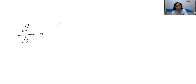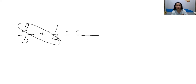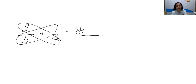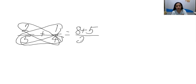Example is 2 fifths plus 1 fourth. So, it is dissimilar because the denominators are different. That is equal to — let's put the fraction bar. First, multiply 2 times 4 which is 8. Then copy the operation which is plus. Then we have 1 times 5 is 5.